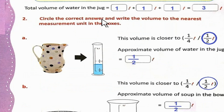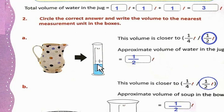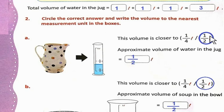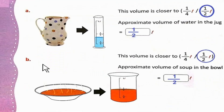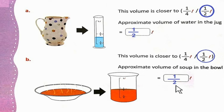Question number 2 — circle the correct answer and write the volume to the nearest measurement unit. Part A: this volume is closer to 1/4 or 1/2? ये 1/2 کے قریب ہے، so circle 1/2. Approximate volume of water in the jug is 1/2 liter. Part B: this volume is closer to 1/2, so circle 1/2. Approximate volume of soup in the bowl is 1/2 liter.